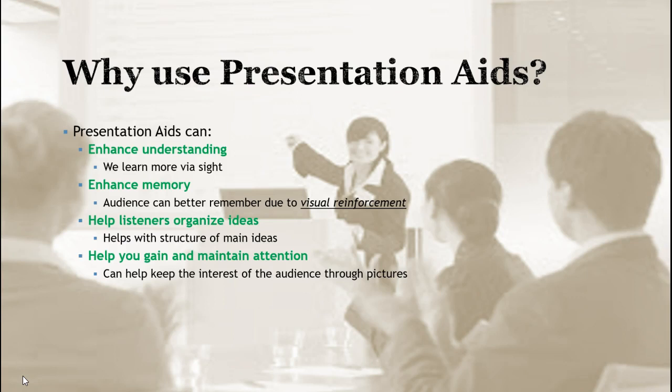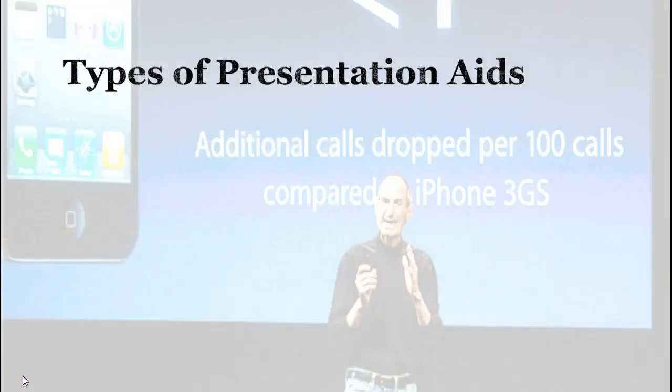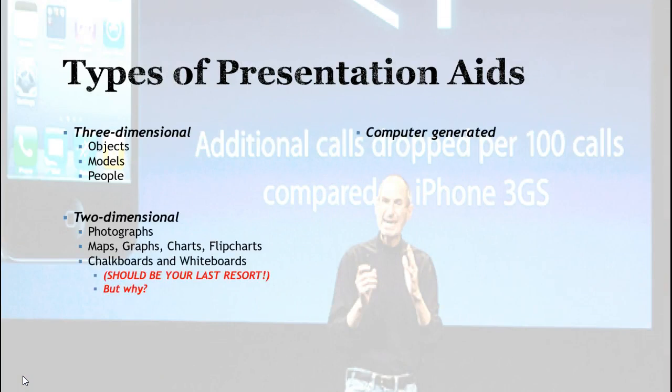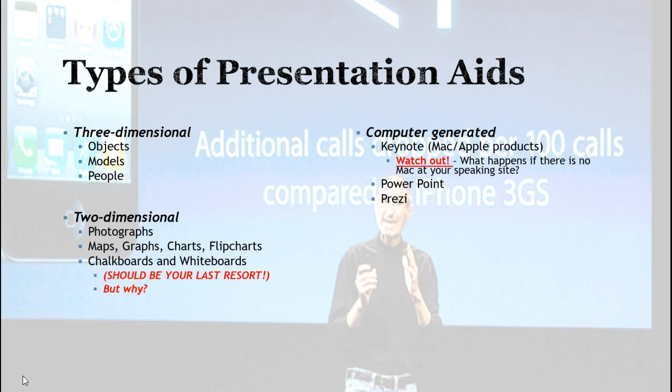So the types of presentation aids—I'm just going to quickly go through these. Most of it is coming from your textbooks, giving you ideas of what could be considered a presentation aid for various types of speeches. Three-dimensional objects, models, things of that nature. We really don't see those a lot more now than what people used to use way back when. Even the use of a person is a type of visual aid as well.